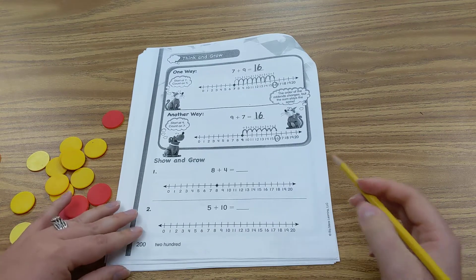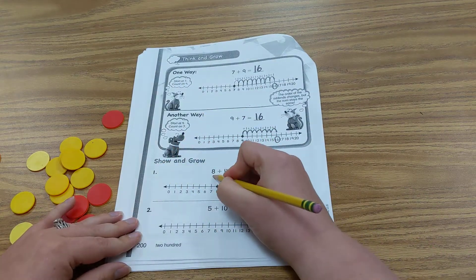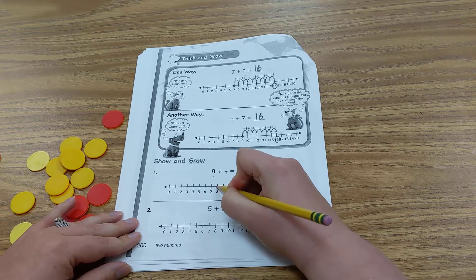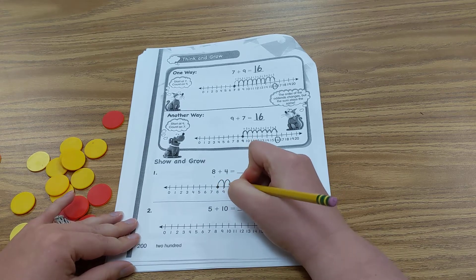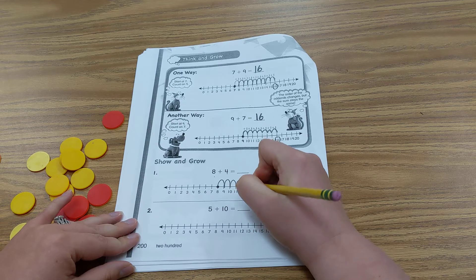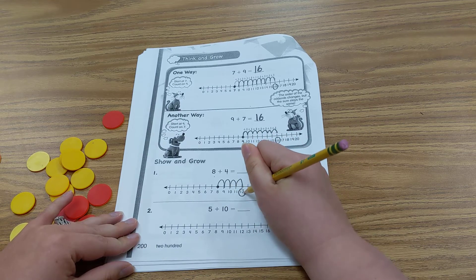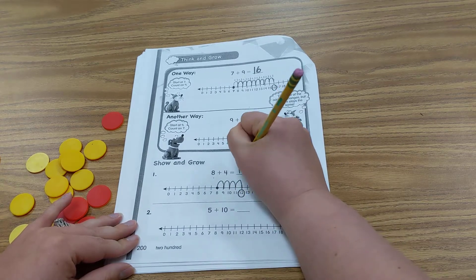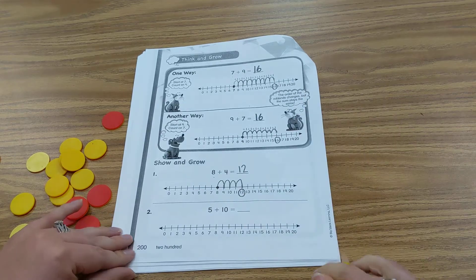Now on number 1, we have 8 and 4 more. So we start at 8 and count up 4. 1, 2, 3, 4. And we end at 12. So our whole is 12.